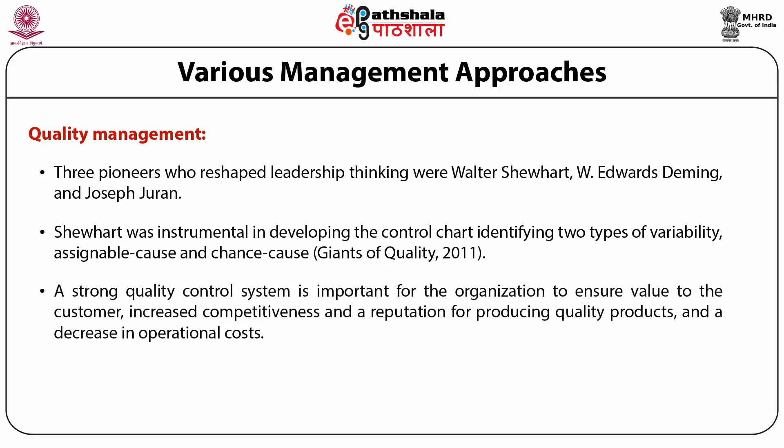A strong quality control system is important for the organization to ensure value to the customer, increase competitiveness and reputation for producing quality products, and decrease operational cost. Deming explicated his management theory with 14 principles of management. Fundamental principles were eliminating waste in the process through statistical process control and continuous process improvement, building quality into the product, engaging the workers and breaking down department walls, and replacing management by numbers with leadership.